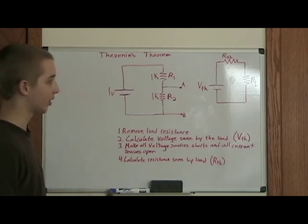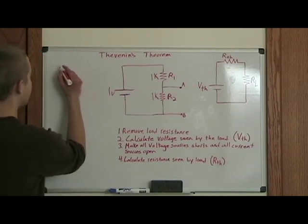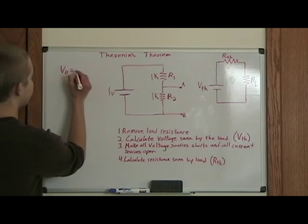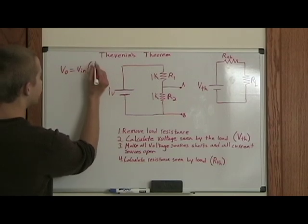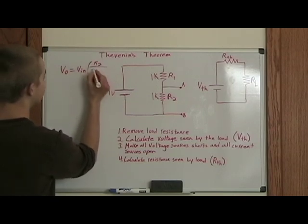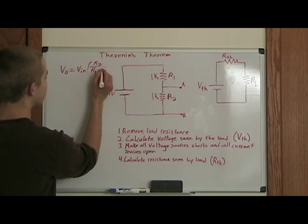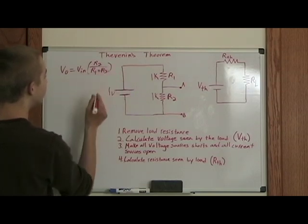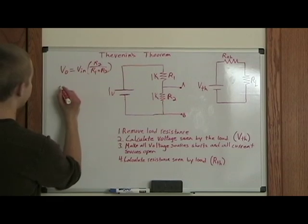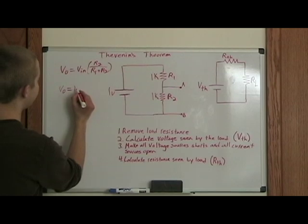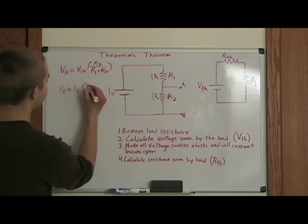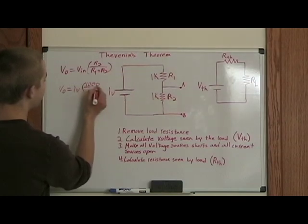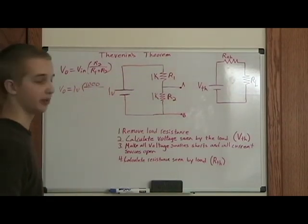So the equation for solving for this is Vout equals Vin times R2 over R1 plus R2. So this is just Vout equals 1 volt, since this is 1 volt, times R2 which is 1000 ohms, divided by R1 plus R2 which is 2000 ohms.